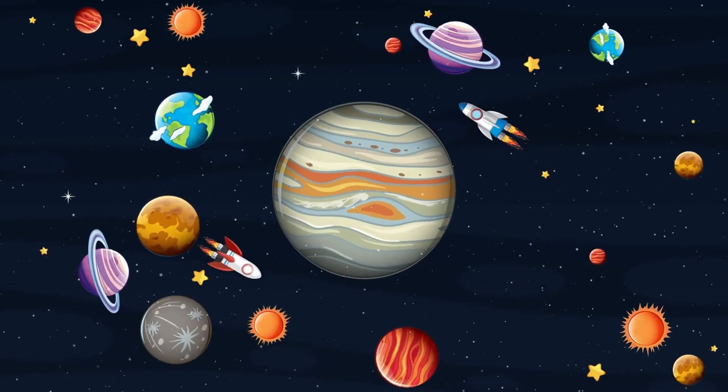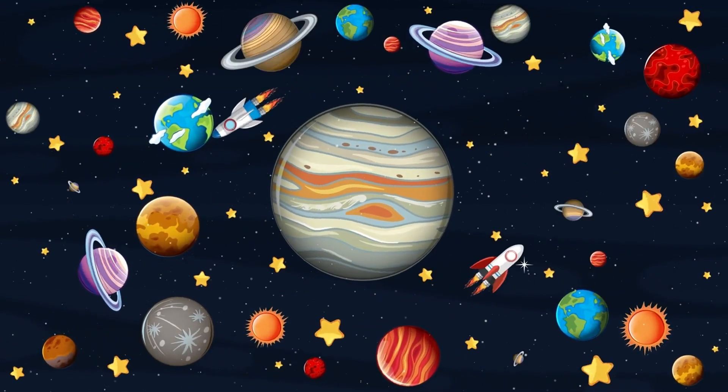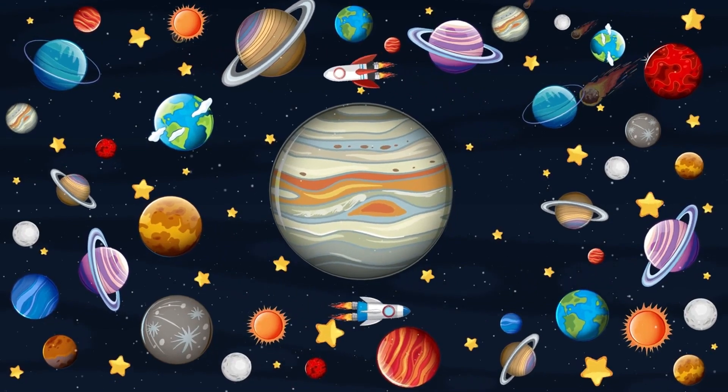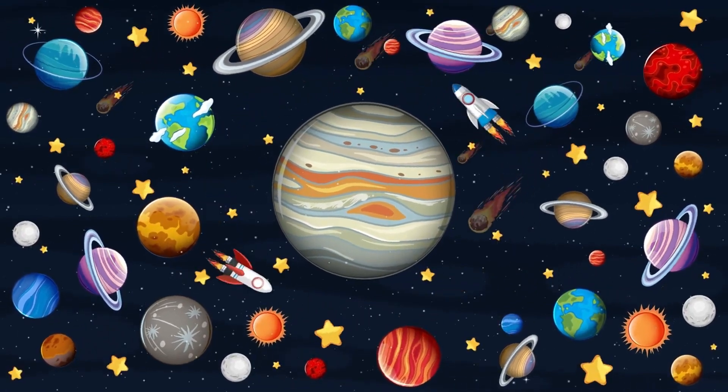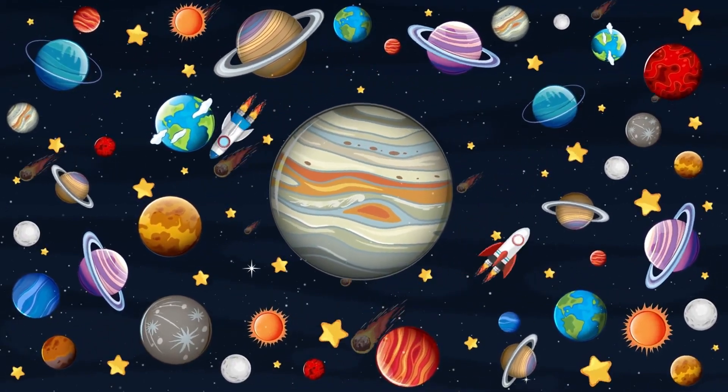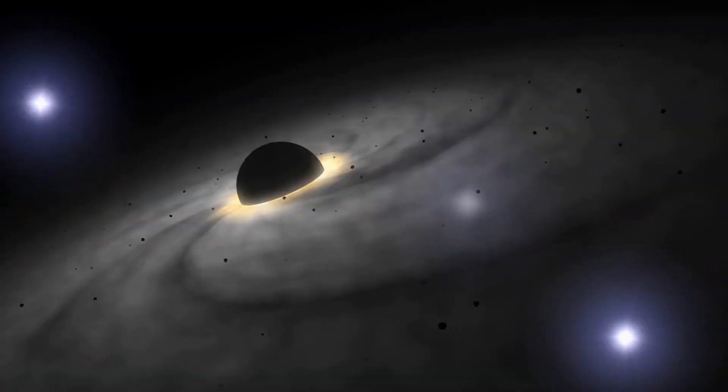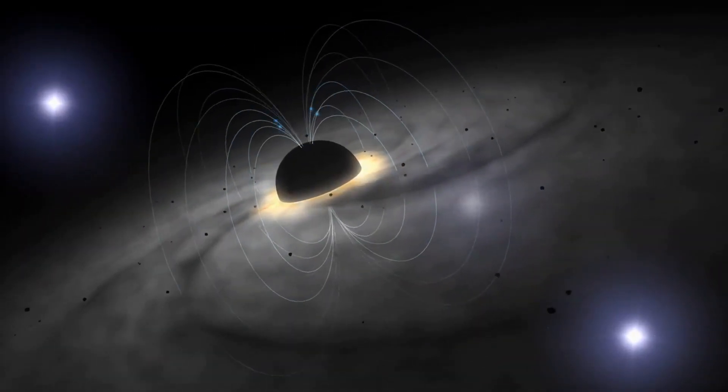Ever wondered what our planet Earth looks like? It is like a tiny blue speck floating in a huge space. Imagine it as this tiny blue dot just floating in the vastness of space.